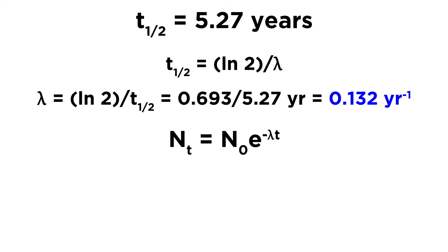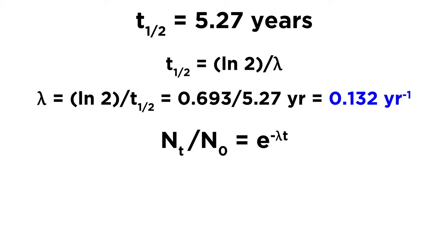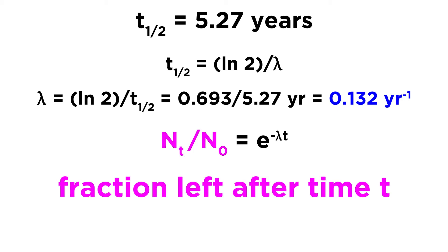Now we want to find how many nuclei will remain after a certain period of time, and for that we use the expression: Nt equals N0 times e to the negative lambda t. Nt is the number of nuclei remaining at time t, and N0 is the initial number of nuclei. Dividing both sides by N0, we get Nt over N0 on the left, which represents the fraction remaining after time t — a relative amount, not a specific number.